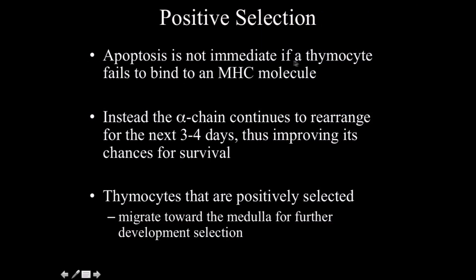Apoptosis is not immediate if a thymocyte fails to bind to an MHC molecule. T cells are valuable — lymphocytes are extremely valuable, and we've put a lot of resources in just to get them to this point. So instead, the alpha chain is going to continue to rearrange for the next 3 to 4 days, improving its chances for survival because the alpha chain has so many J segments. Thymocytes that are positively selected migrate towards the medulla for further development.